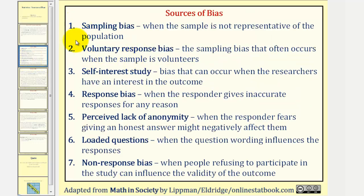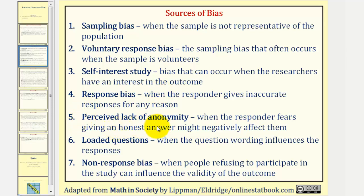Let's go ahead and take a look at this list. We've already mentioned the first two: number one, sampling bias is when the sample is not representative of the population; two, voluntary response bias, the sampling bias that often occurs when the sample is volunteers; three, self-interest study, bias that can occur when the researchers have an interest in the outcome; four, response bias, a very broad category when the responders give inaccurate responses for any reason; five, perceived lack of anonymity, when the responder fears giving an honest answer might negatively affect them; six, loaded questions, when the question wording influences the responses; seven, non-response bias, when people refusing to participate in the study can influence the validity of the outcome.